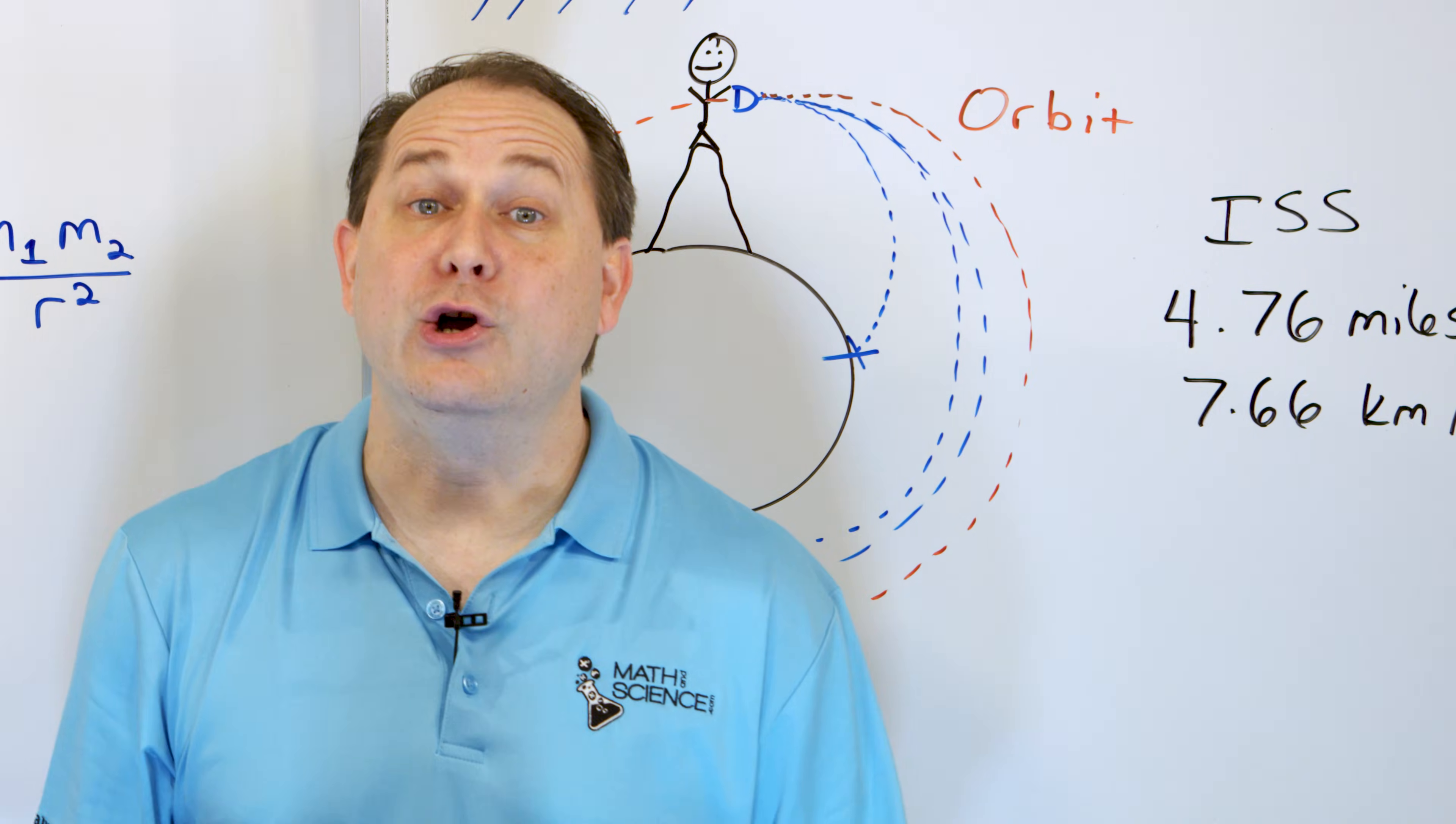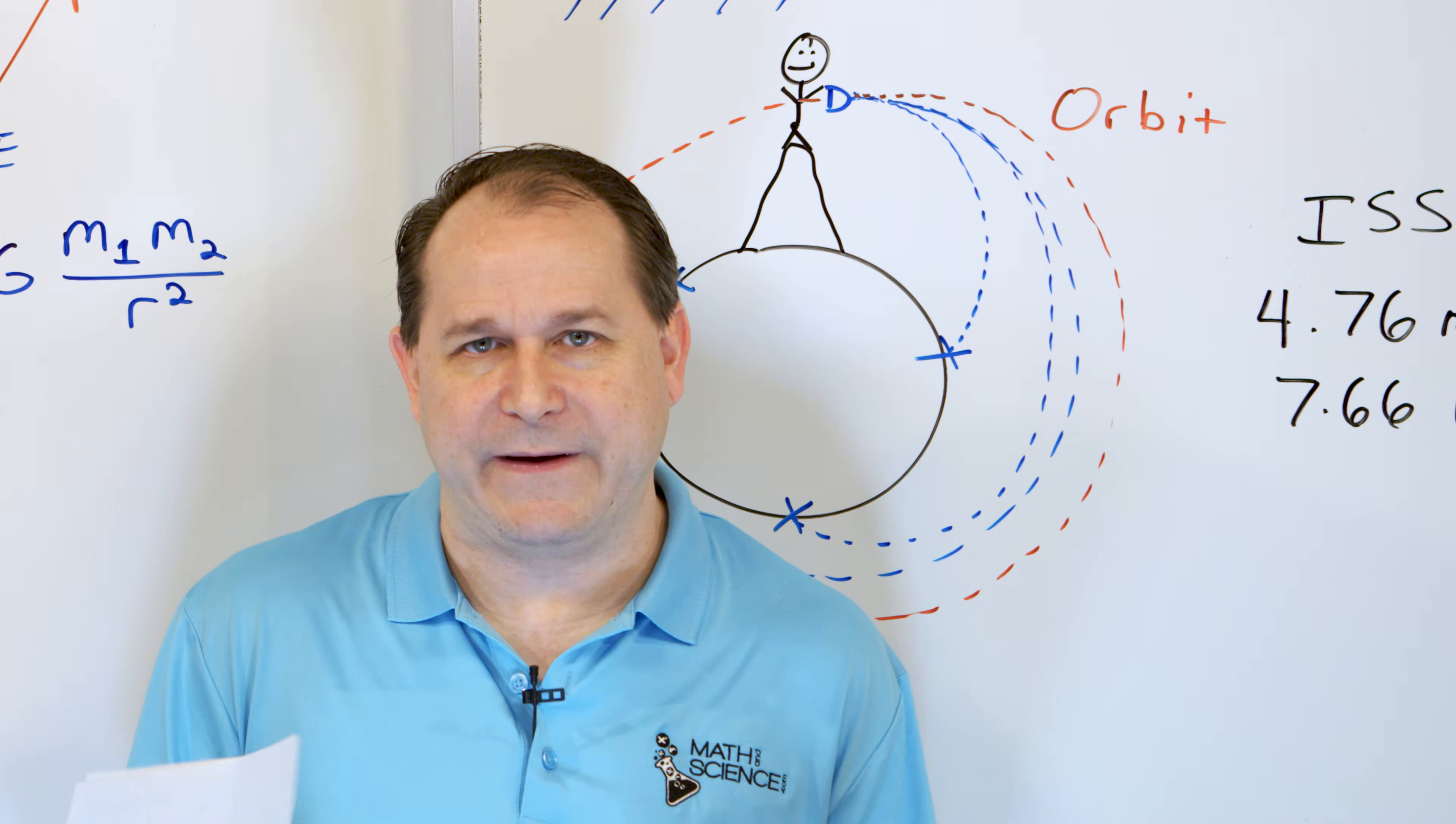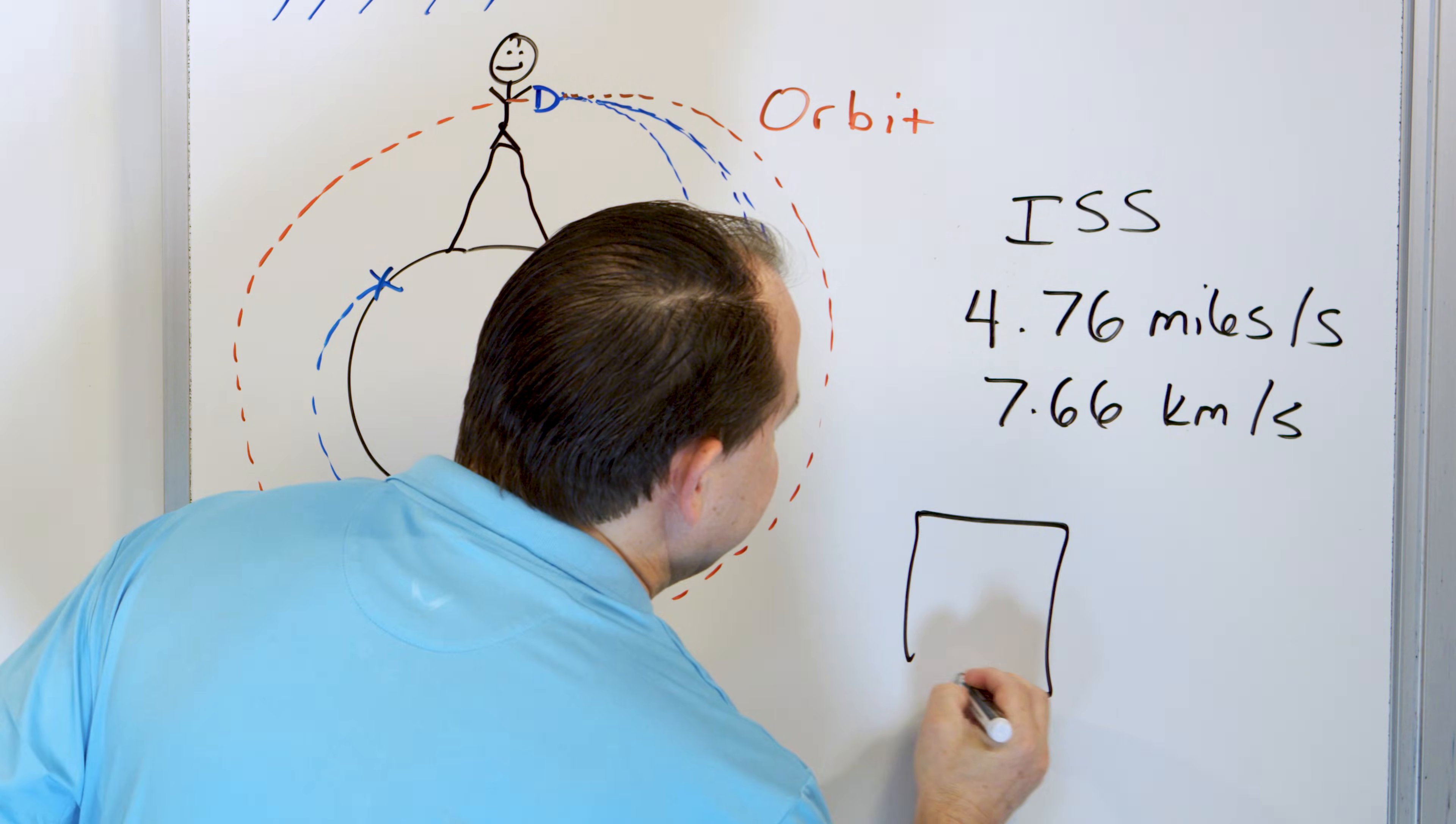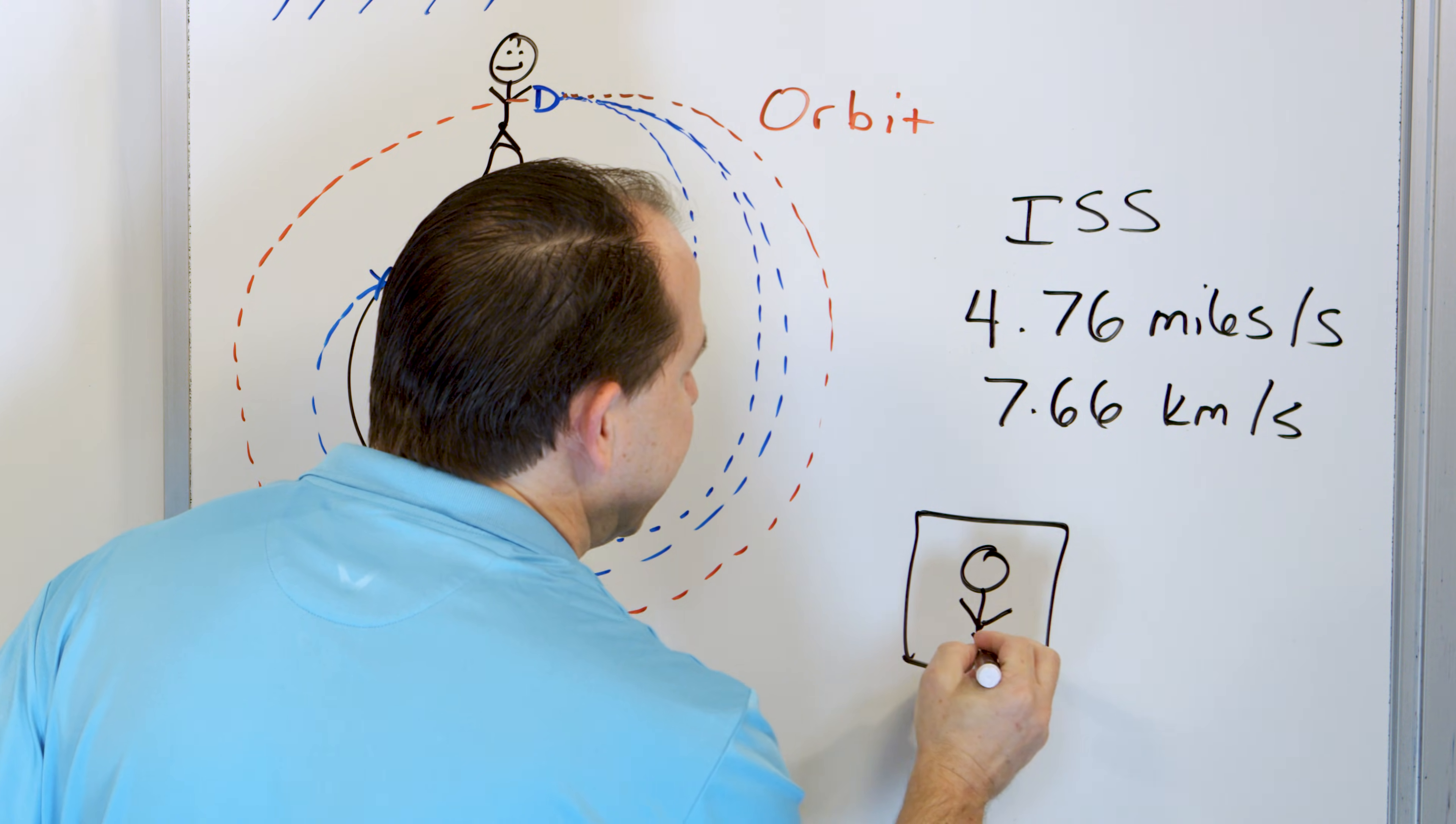Now, why do we float? We float for the same reason in an elevator. When I drop in an elevator and I'm falling, then I'm falling at the same speed as the elevator. So inside of my spaceship, which is going around the Earth falling, I am inside falling as well.